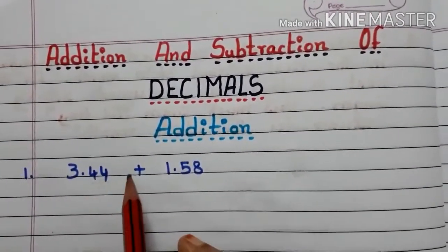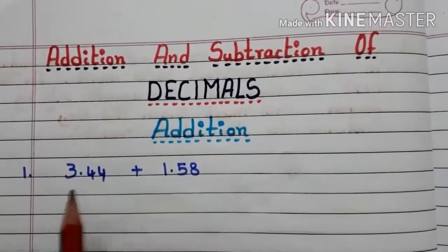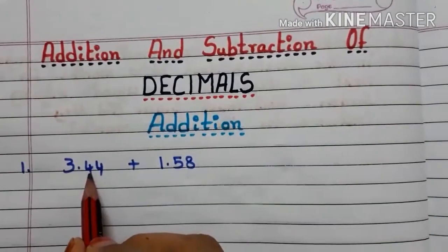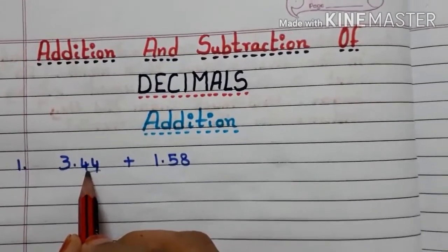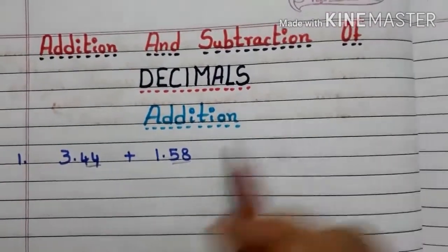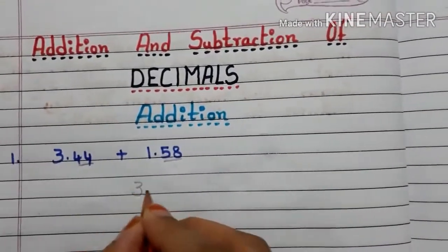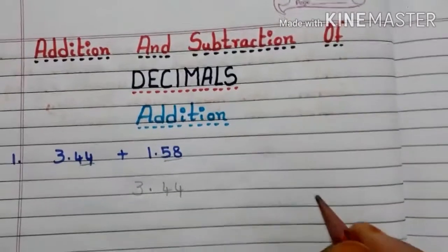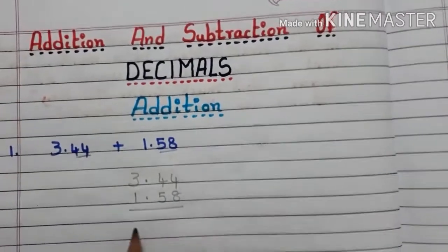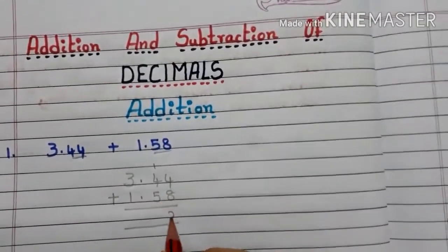First we go with addition. Here we have 3.44 plus 1.58. We check whether these are like decimals or unlike decimals. This decimal has two decimal places and this decimal also has two decimal places, so these two are like decimals. Now arrange them: 3.44 and 1.58.